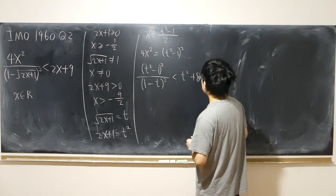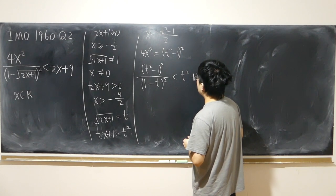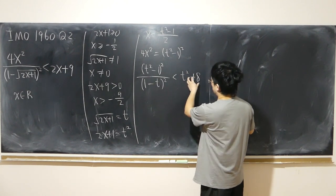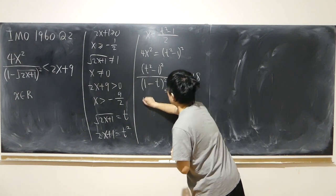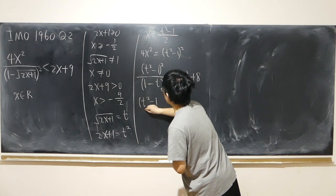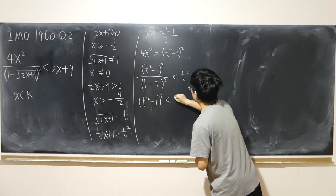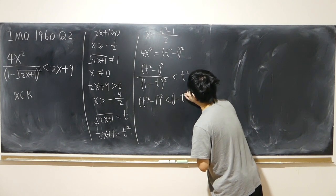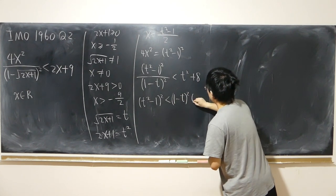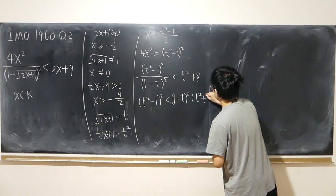Now, this time we say, okay, the bottom is positive, so multiply this over, maintain the direction. So t squared minus 1 quantity squared, less than 1 minus t quantity squared times t squared plus 8.